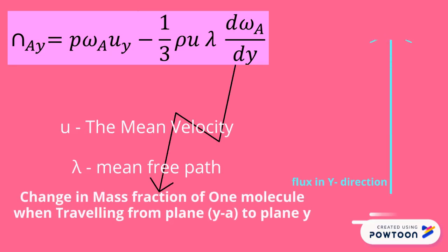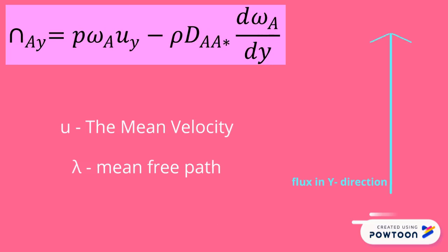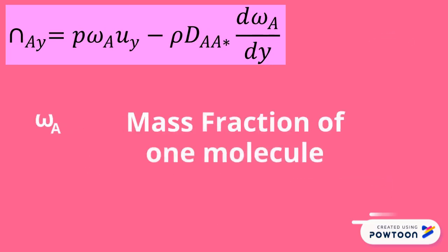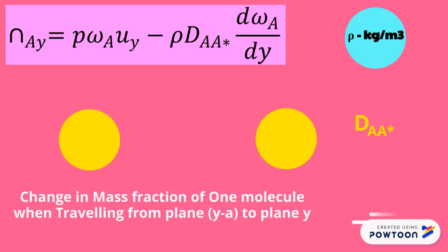Further simplified to rho*omega_A*Vy minus rho*D_AA*, which is the self diffusivity, times d(omega_A)/dy.